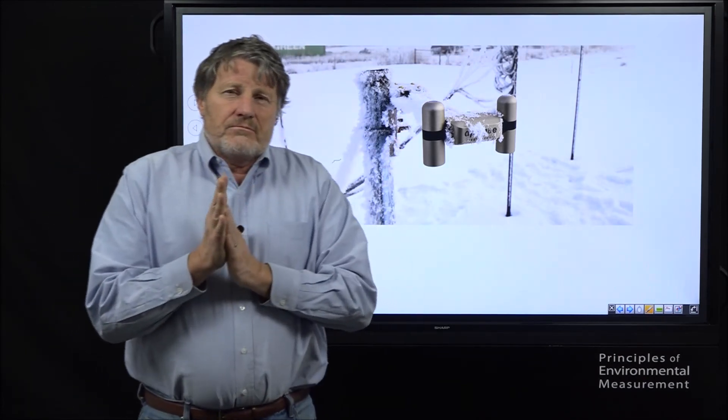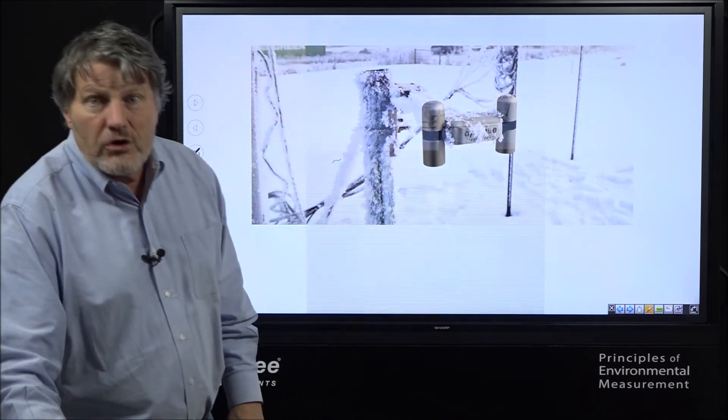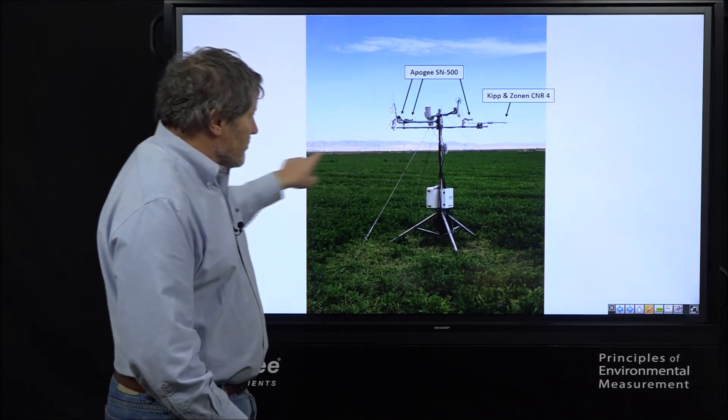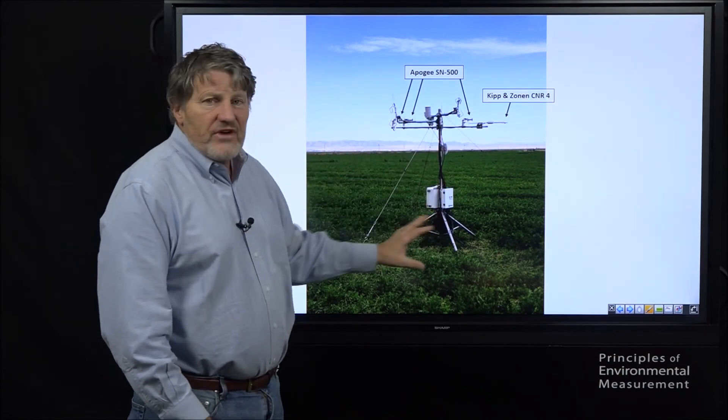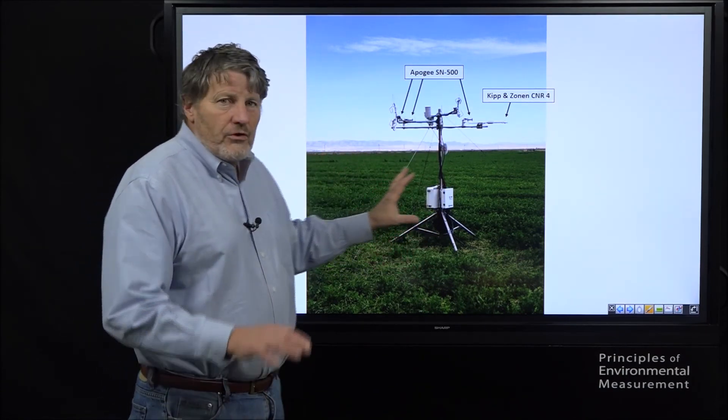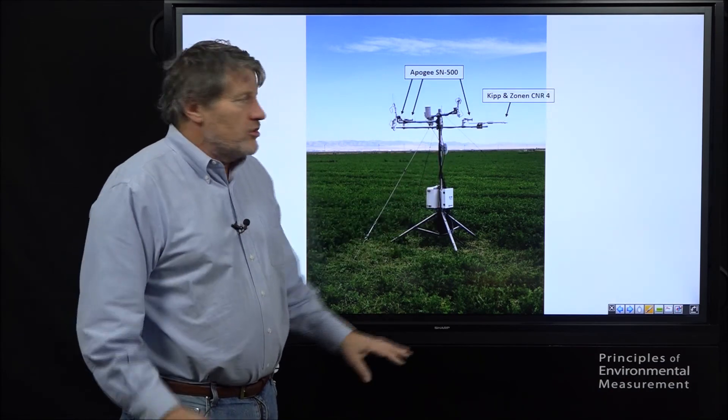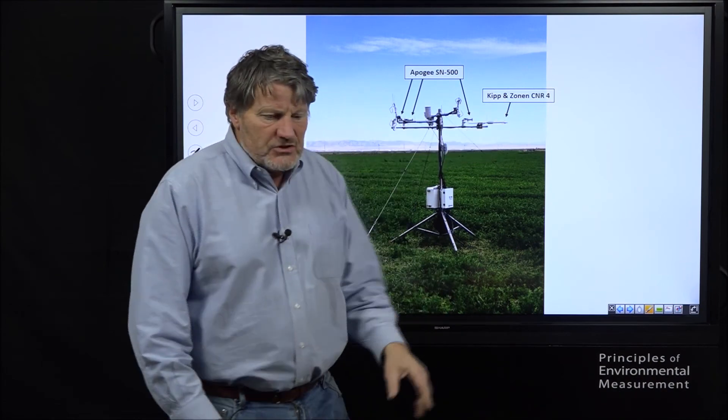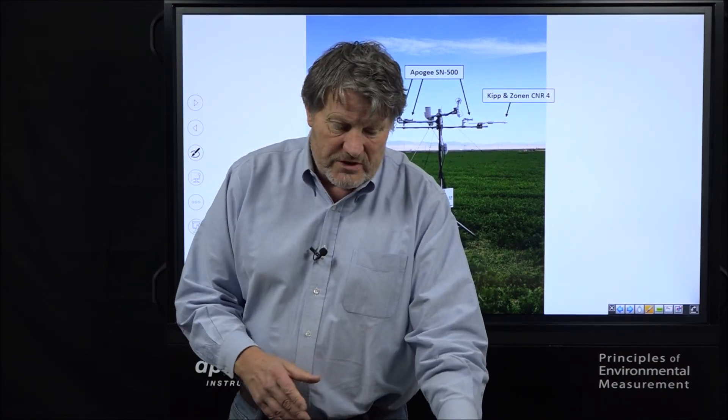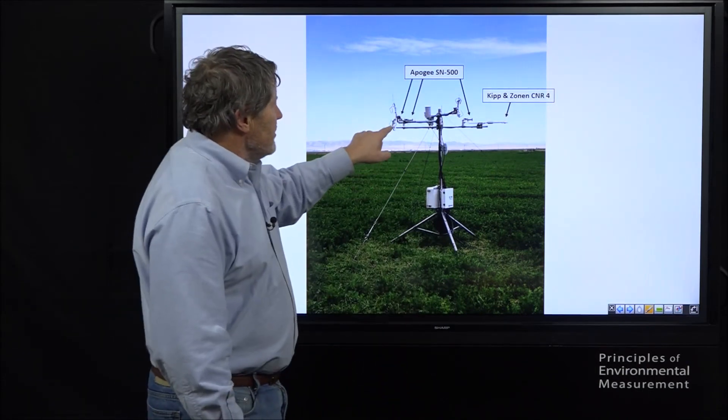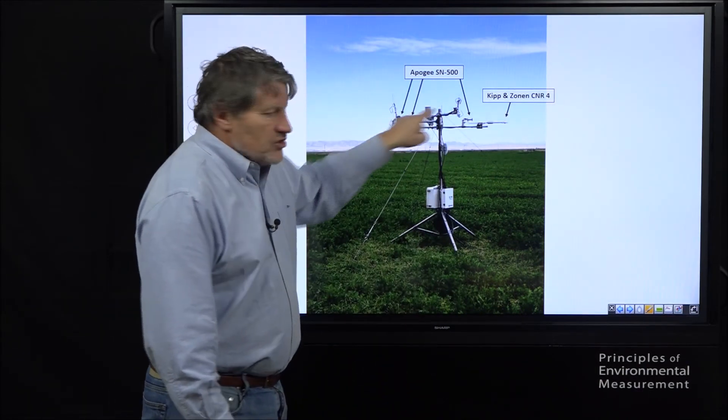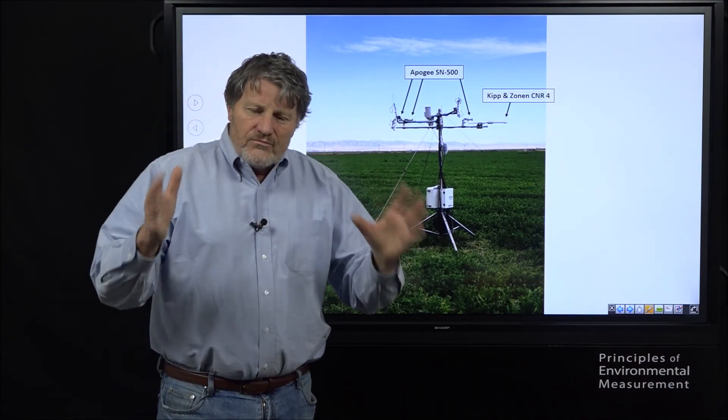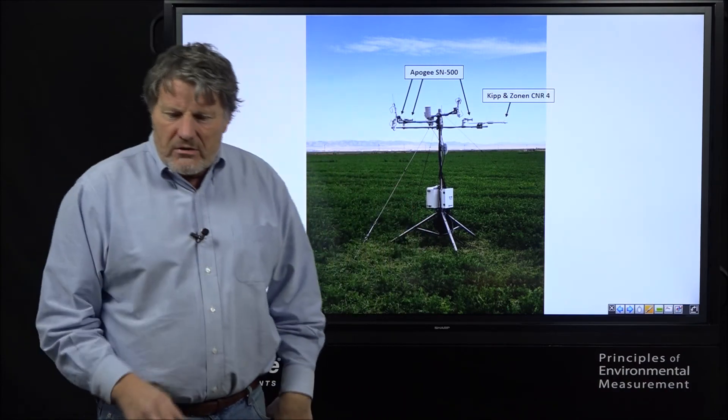How accurate is it? Well, we have deployed this in the field. You can tell this is Utah, because we have mountains in the background. Over a big alfalfa field, over 15 months, over a year, we compared them to the high-end Kip and Zonen. This is the most expensive of all the instruments. And we had three triplicate Apogee net radiometers on this tower. So, through the winter, through the summer, comparing the accuracy,